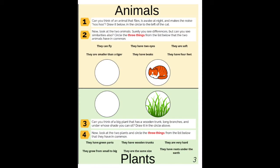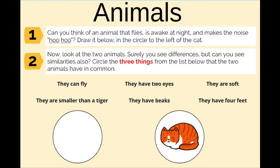The first page looks like this. Now go to number one under animals. Number one says: can you think of an animal that flies, is awake at night, and makes the noise whoo whoo? Draw it below in the circle to the left of the cat.